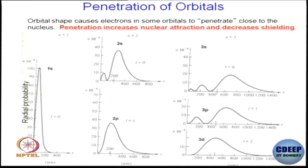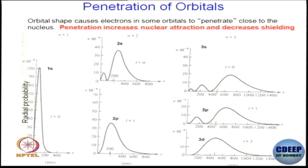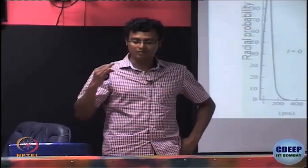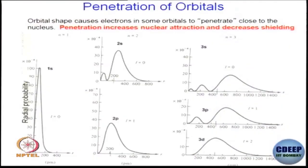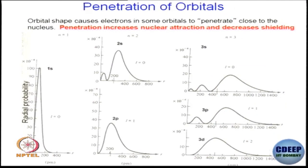If this is the 1s electron we are talking about, then the 1s electron is distributed with respect to the nucleus. If the nucleus is at the center, the probability of finding the 1s electron is going to be like this — the probability of finding the 1s electron towards the nucleus is quite high. If you look at the 2s electron, the probability of finding the 2s electron at the nucleus is not that much; of course there is a node at a certain distance, after which there is a probability of finding the 2s electron that is quite high.